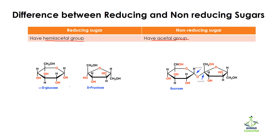What is a hemiacetal group? A hemiacetal group means that one carbon has two groups attached: one group is OH while the other group is OR. In this case, the R is actually C, so you can say the carbon atom is attached with one OH and one OC group.